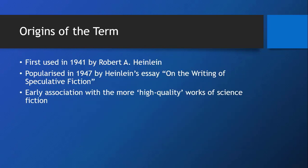The term was first used in 1941 by Robert A. Heinlein and then popularised in 1947 in his essay on the writing of Speculative Fiction. Early on, it was often associated with more high-quality works of science fiction — literary science fiction, if you will. To an extent, this meaning is still in use today.